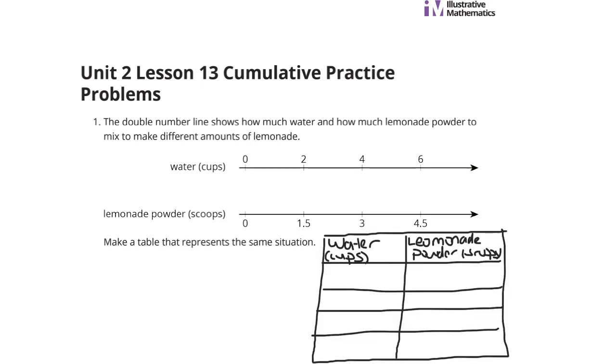Well, here's a table of water cups and lemonade powder scoops, and just bring our water down: 0, 2, 4, 6. And our lemonade powder scoops: 0, 1 and a half, 3, and 4 and 5 tenths. Matches perfectly.